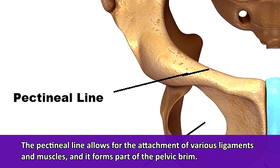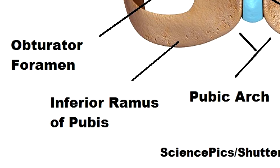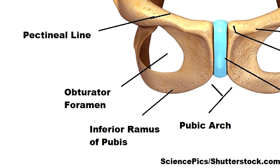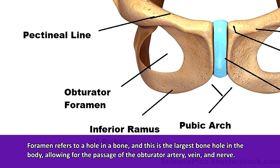The pectineal line also forms part of the pelvic brim, which will be covered in a future video. The inferior ramus is the lower portion of the pubis that branches out. These two rami of the pubis join the ischium, forming a large hole in the hip bone called the obturator foramen — the largest bone hole in the human body. The word foramen refers to a hole in a bone, and this one allows for the passage of the obturator artery, vein, and nerve. There's also an obturator muscle that attaches in this area.